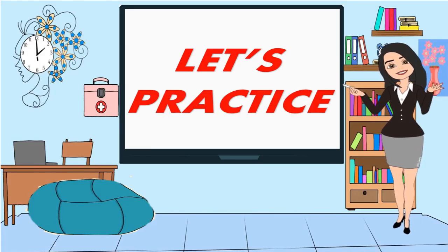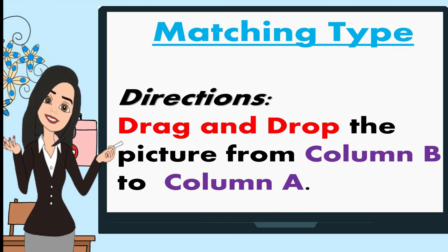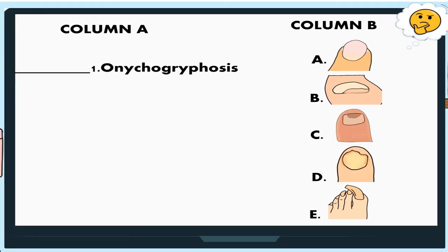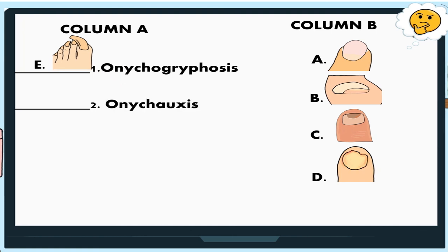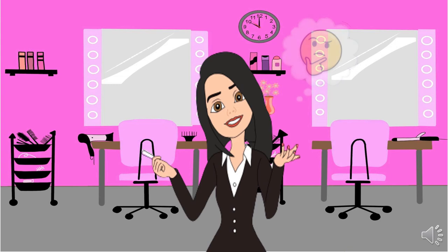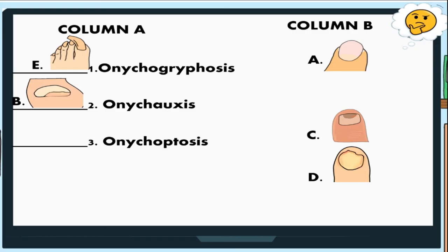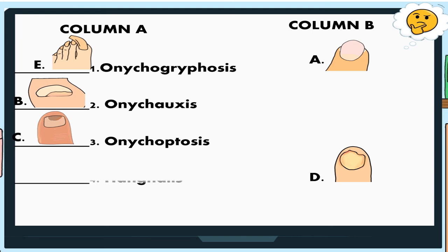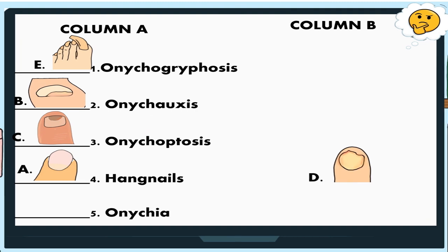Let's practice! Matching type — drag and drop the picture from column B to column A. Number 1: Onychogryphosis — the answer is letter E. Number 2: Onychosis — the correct answer is letter B. Number 3: Onychoptosis — it's letter C. Number 4: Hangnails — it's letter A. And number 5: Onychia — it's letter D. Job well done!